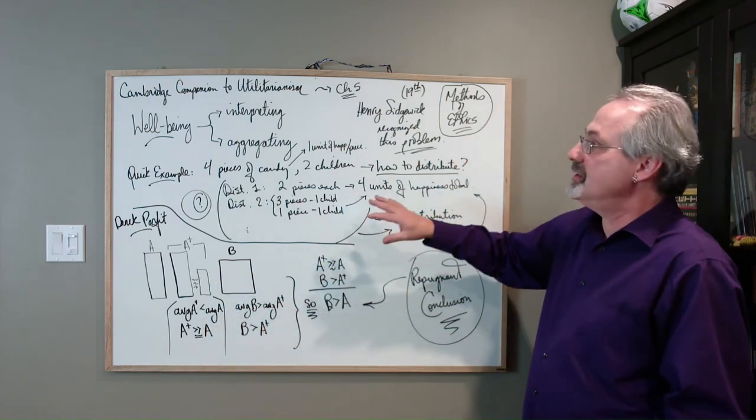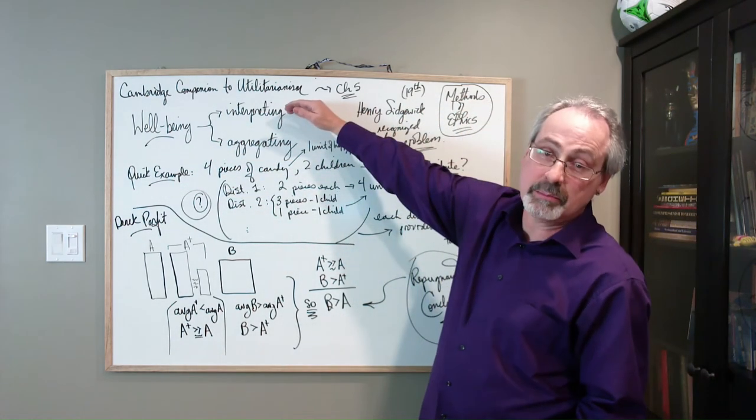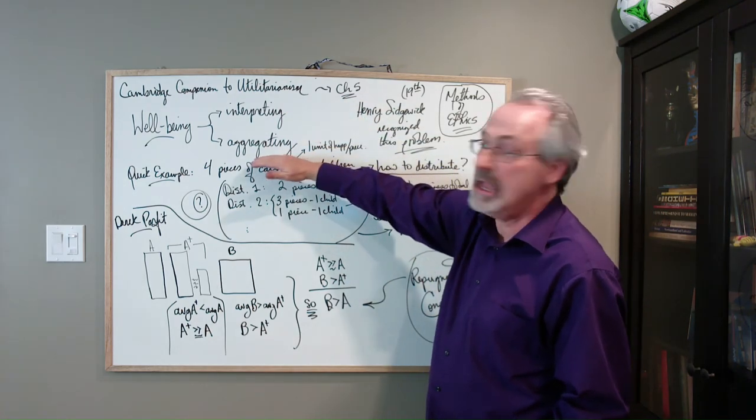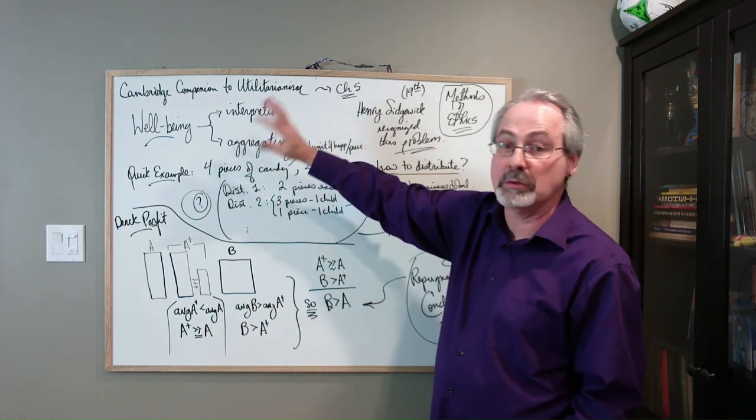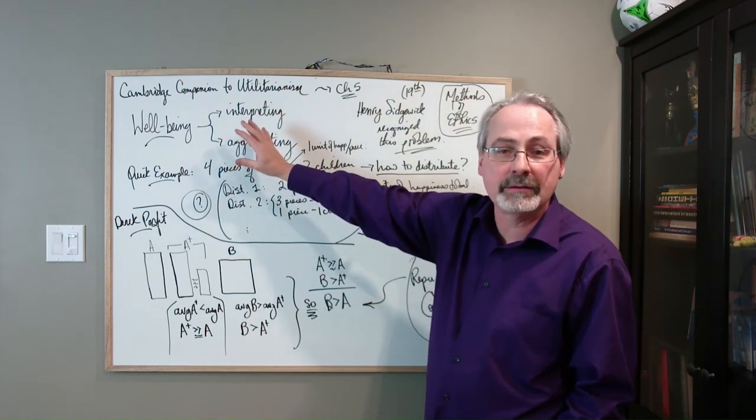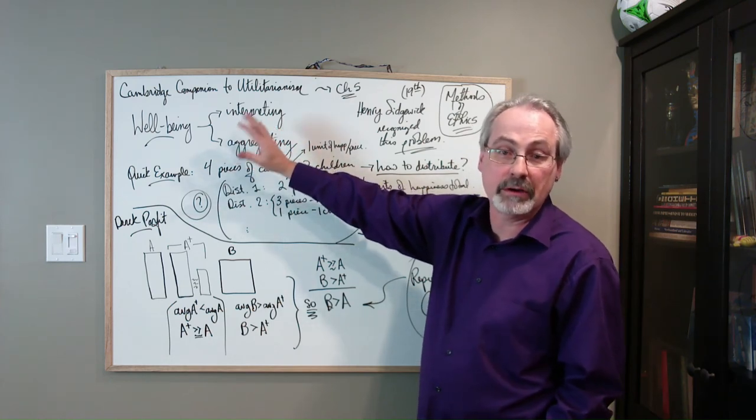but it gets a lot more involved. This is just the start. So that brings this bit to a close. So wellbeing is your key concept. It's got the problem of interpretation and then the problem of aggregating how to do it. And there's lots, and this is an ongoing and lively topic of investigation in the philosophical journals on utilitarianism.